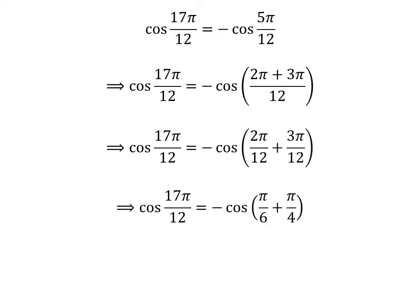Following the above steps, we get cosine of 17π/12 is equal to minus cosine of (π/6 + π/4).